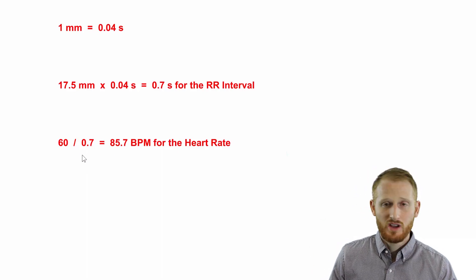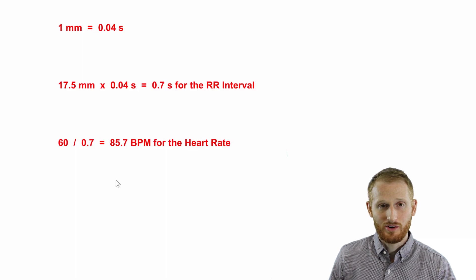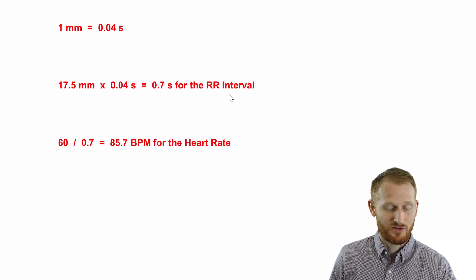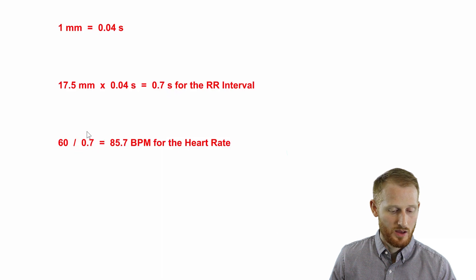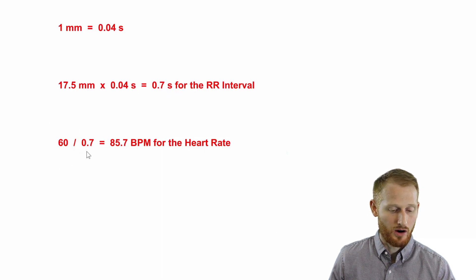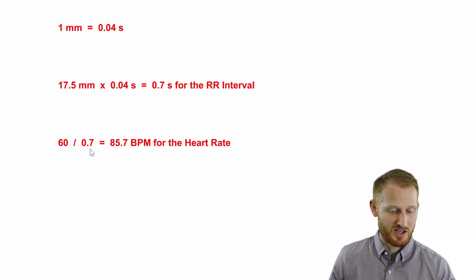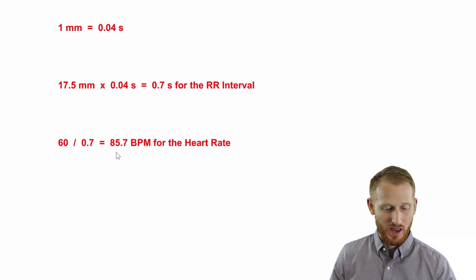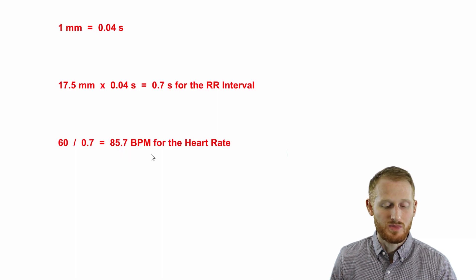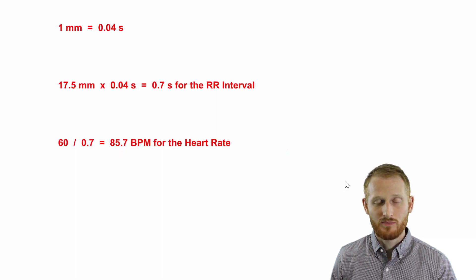If we want to get heart rate from that 0.7 seconds R-to-R interval, we can simply plug it into this formula: 60 divided by the R-to-R interval. So in this circumstance, it was 60 divided by 0.7, and we end up with 85.7 beats per minute for her heart rate.